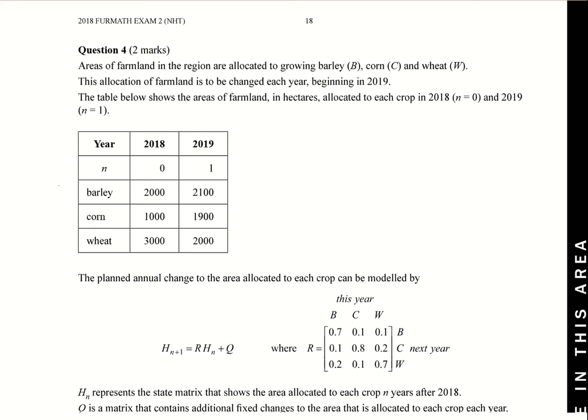In this video we're going to look at question four of the matrices from the 2018 Further Maths exam from the NHT. In this question we've got areas of farmland in the region allocated to growing things like barley, corn, and wheat.